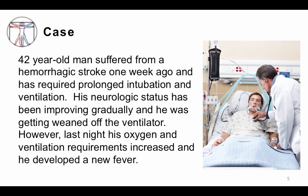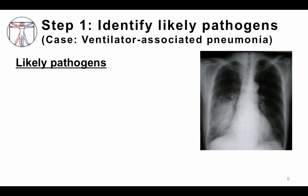Let's think about this in a case format. You have a 42-year-old man who suffered a hemorrhagic stroke one week ago and has required prolonged intubation and ventilation. His neurologic status had been gradually improving and he was being weaned off the ventilator, but last night his oxygenation status worsened, his ventilator requirements increased, and he developed a new fever. You're worried the patient has hospital-acquired pneumonia, specifically ventilator-associated pneumonia.